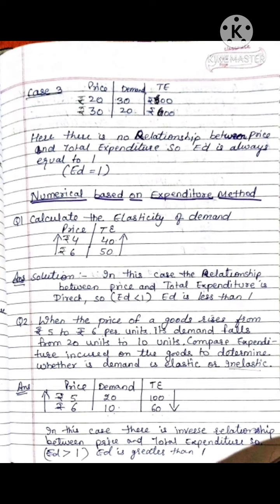Question 3: A consumer buys 10 units of a good at a price of rupees 6 per unit. Price elasticity of demand is minus 1. At what price will he buy 12 units? Using the expenditure approach: since ED = -1 (unitary), total expenditure remains constant. Total expenditure = 6 × 10 = 60. With quantity = 12, price = 60 ÷ 12 = 5 rupees per unit.